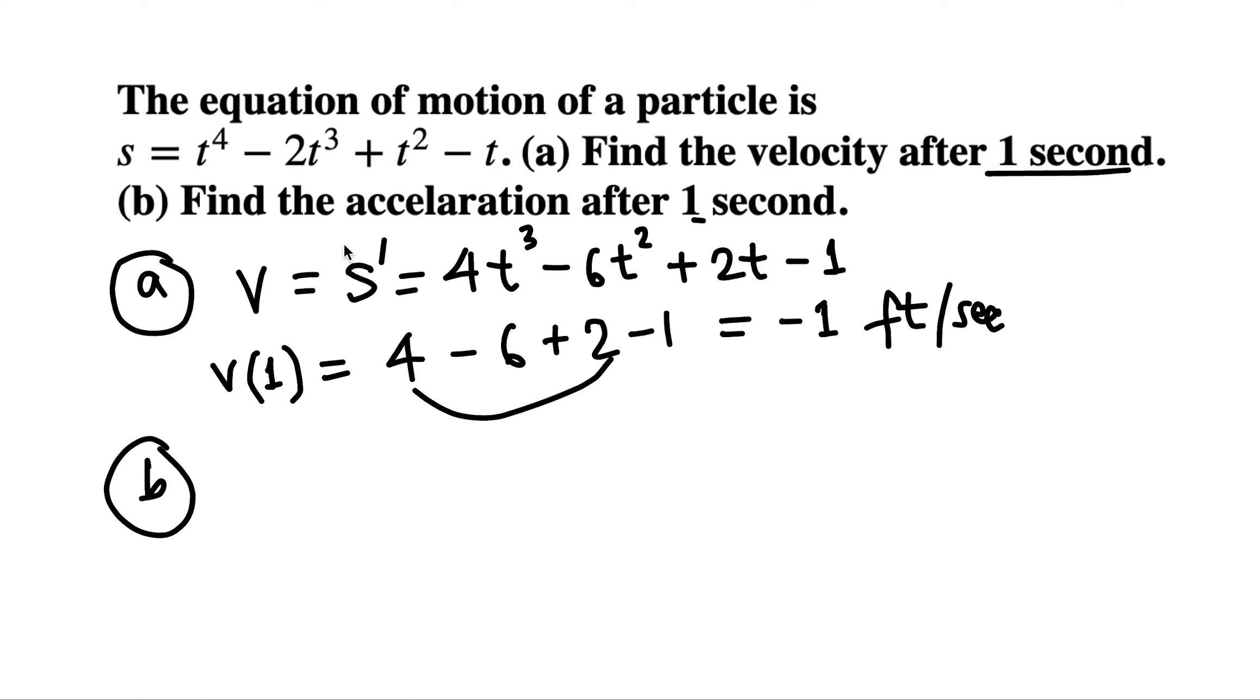In part B, find the acceleration. Acceleration is denoted by a, which will be the derivative of this velocity function. So find v prime, the derivative of 4t cubed. Power rule: 3 times 4 is 12t squared, minus 12t, plus 2, minus the derivative of 1 is 0.